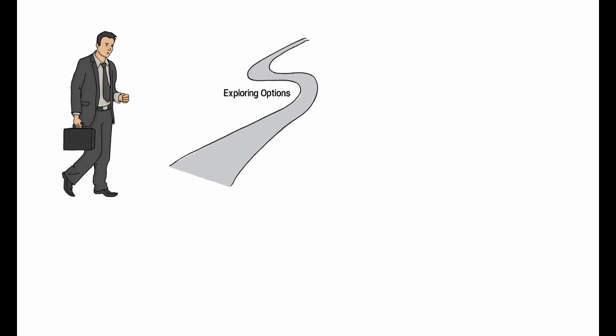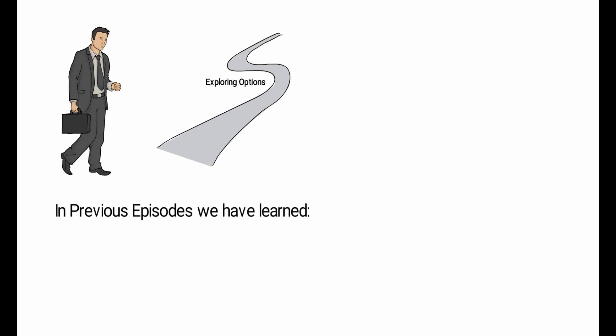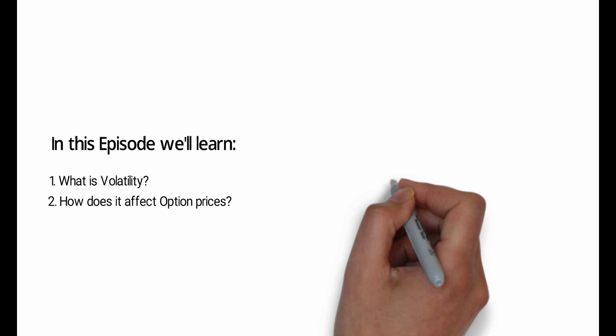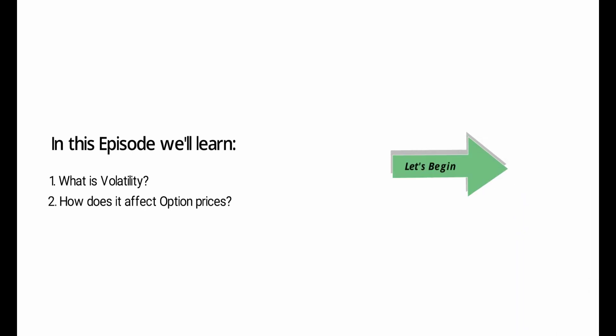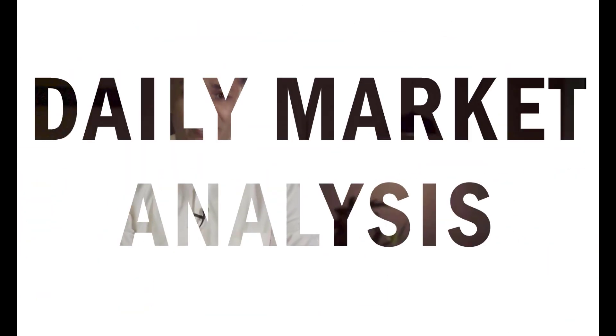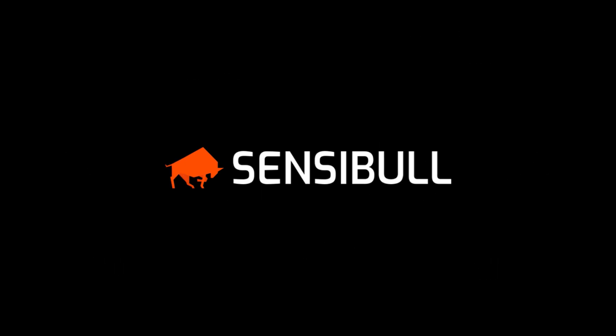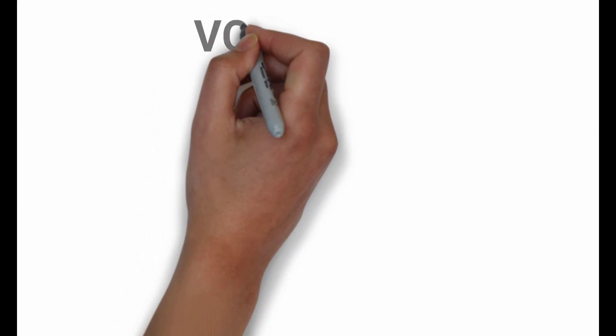In the last few videos we have learned what affects option prices. So far we have seen the effect of stock price, strike price, and time. In this episode we will discuss volatility in detail. So let's begin — we have one last thing left: volatility.